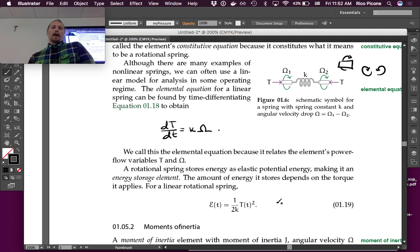Finally, energy is stored as elastic potential energy for these rotational springs, making it an energy storage element. The amount of energy in storage depends on the torque applied, so for linear rotational springs, it's proportional to the square of the torque. That's all we've got for springs.